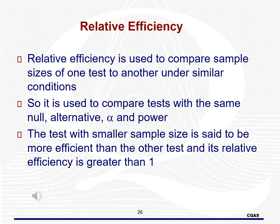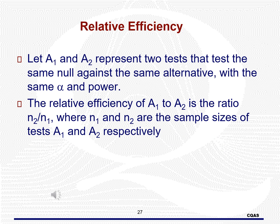We can decide which test is better using relative efficiency. Relative efficiency is used to compare sample sizes of one test to another under similar conditions — the same null, alternative, alpha, and power. The test with the smaller sample size is said to be more efficient and its relative efficiency is greater than one. If a1 and a2 represent two tests with the same null, alternative, alpha, and power, the relative efficiency of a1 to a2 is the ratio n2 slash n1, where n1 and n2 are the sample sizes of tests a1 and a2 respectively.